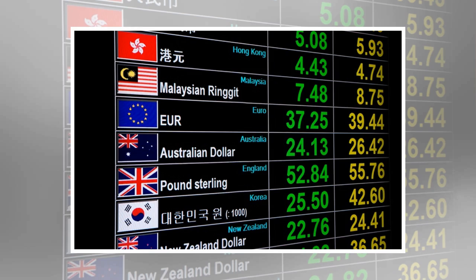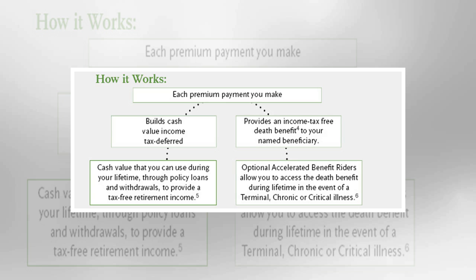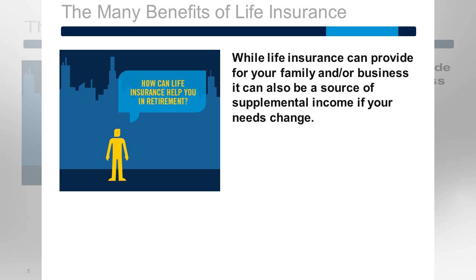There are different types of permanent policies: whole life, universal life, variable universal life, etc., and they each have their pluses and minuses. Describing the differences would be lengthy and outside the scope of this article. For simplicity's sake, I'm going to base the rest of this article on universal life.